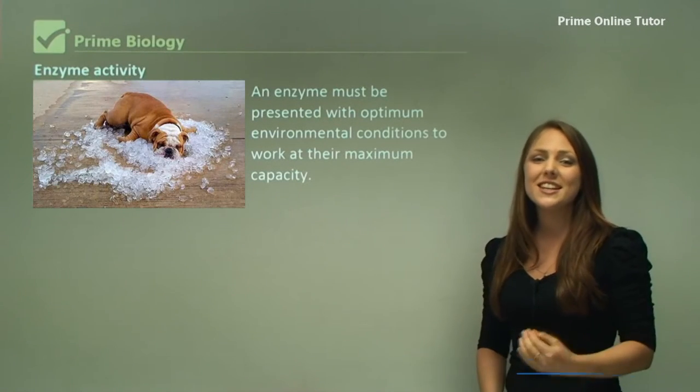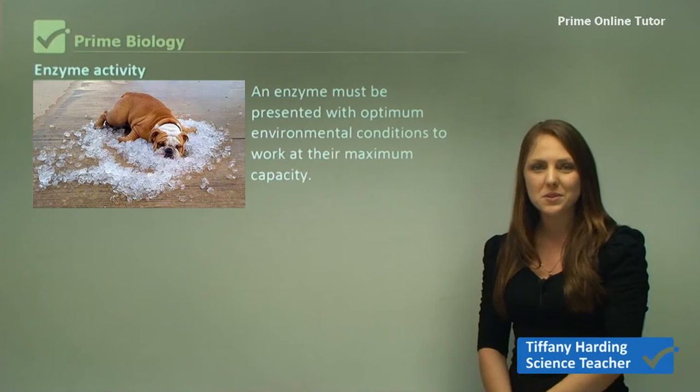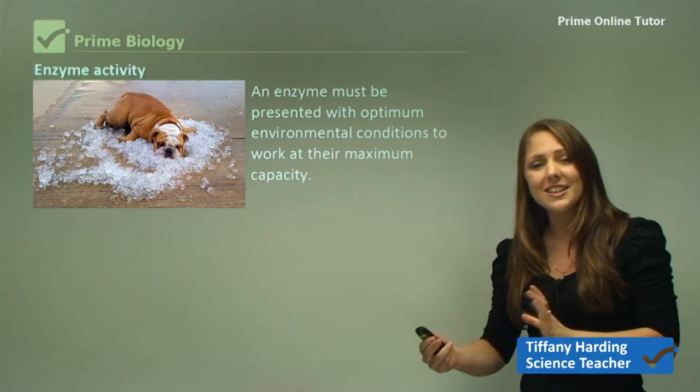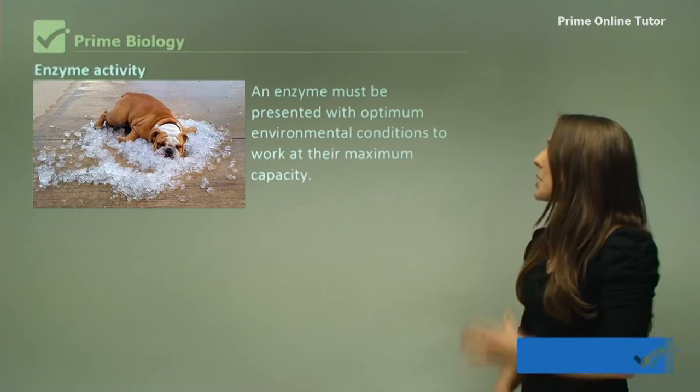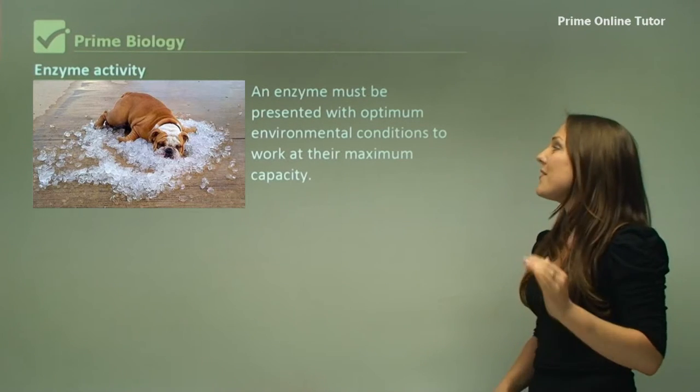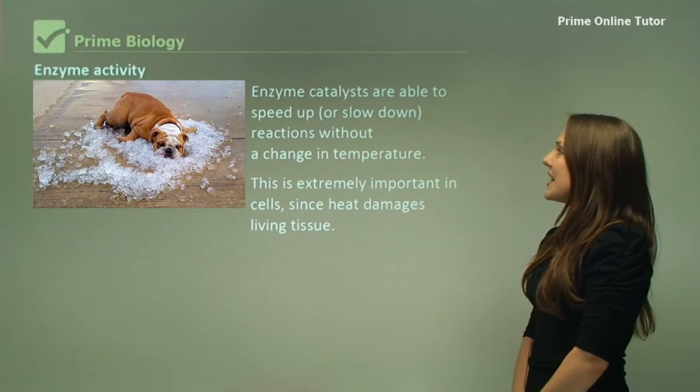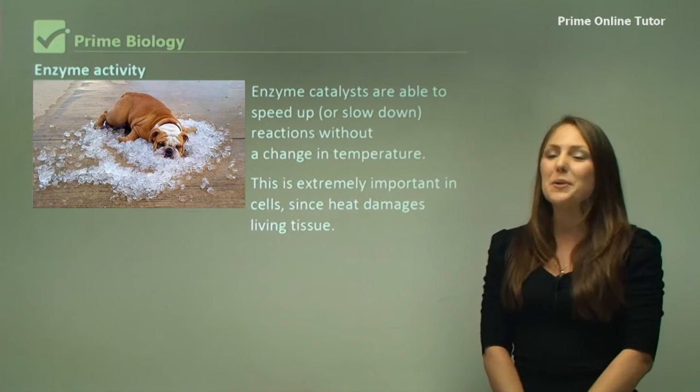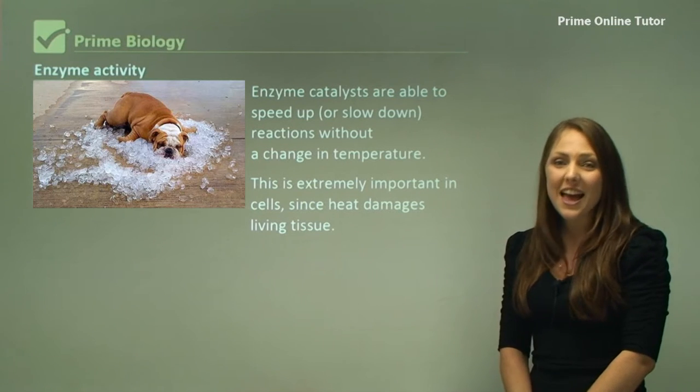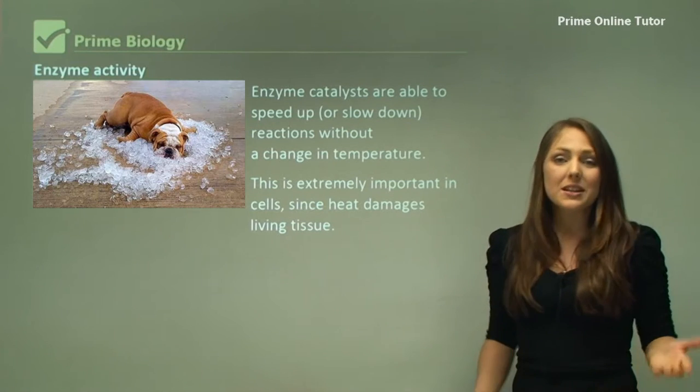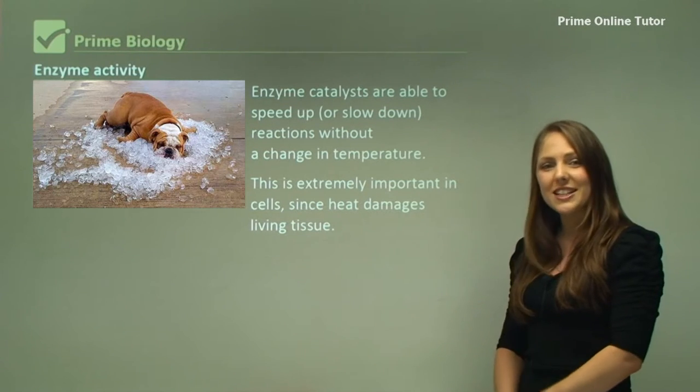Enzymes need specific conditions to actually perform optimally. An enzyme's activity is affected by the conditions that it's in. An enzyme must be presented with optimum environmental conditions to work at their maximum capacity. Enzyme catalysts are able to speed up or slow down reactions without a change in temperature. This is extremely important in cells since heat can damage living tissue.